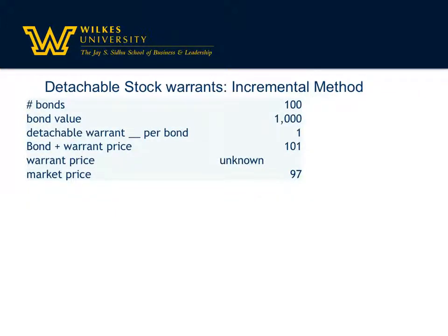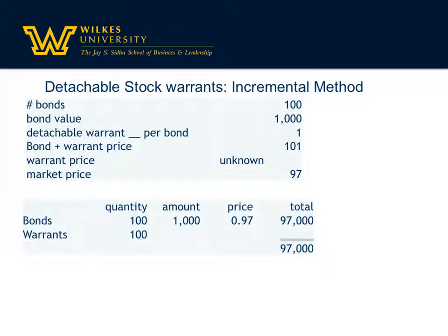But what do we do if we don't know the price of the warrant — we don't know the market value? It's an inducement to get people to invest in our bonds and there's got to be some value to them, we're just not sure. So we're going to use the incremental method. That means we start with the value we know of the bonds, put that as the base, and say anything beyond that is the market price of the warrant.